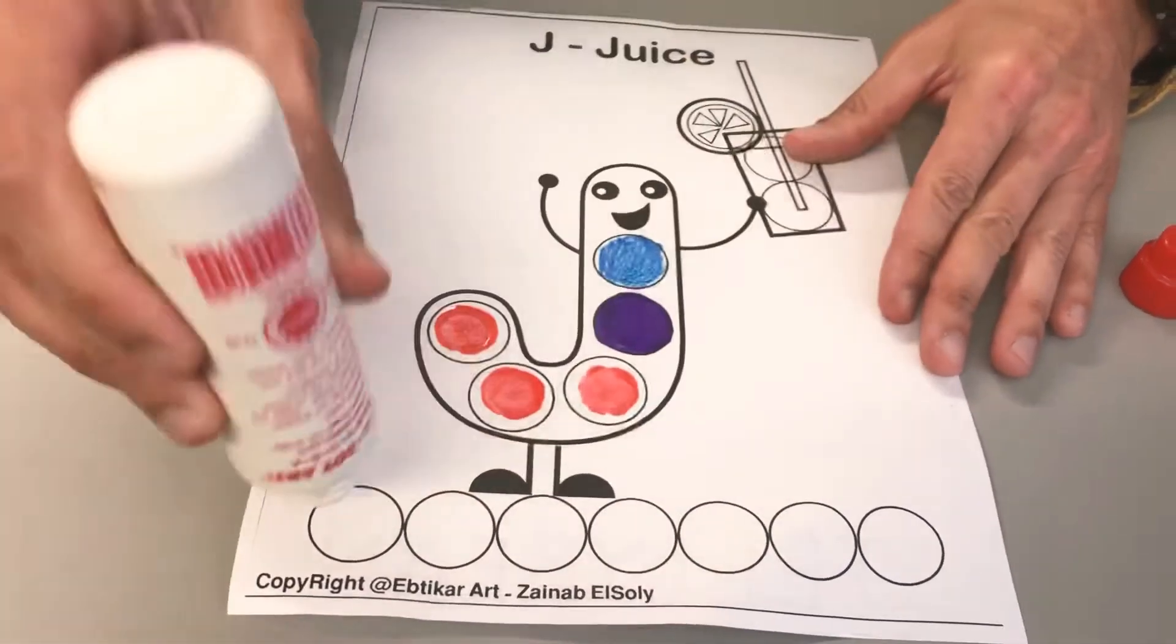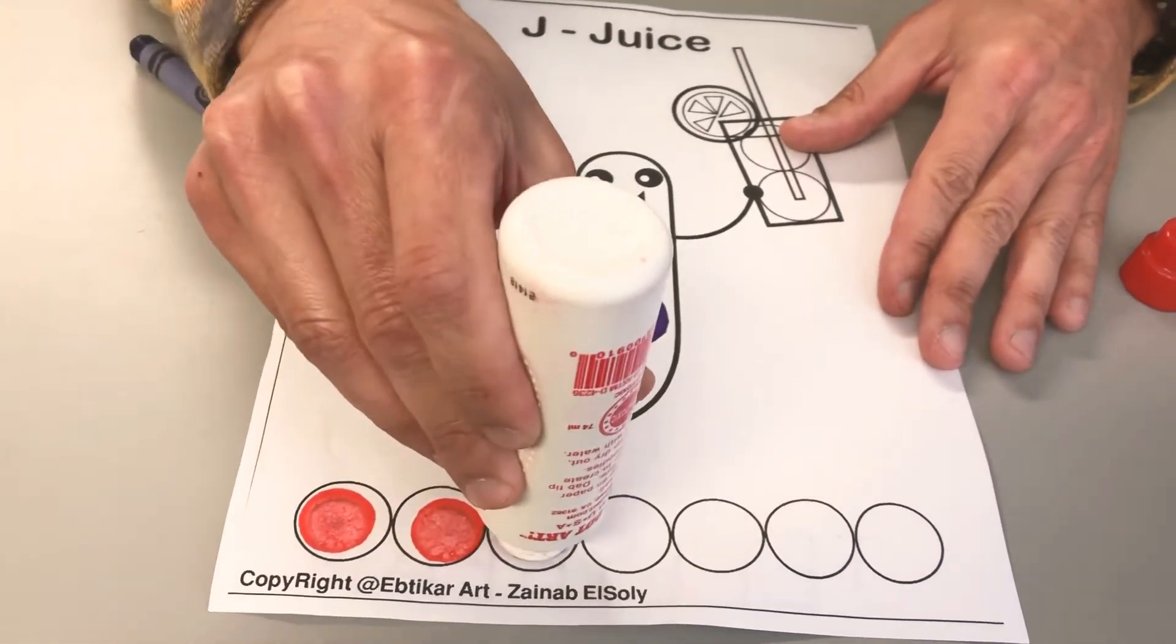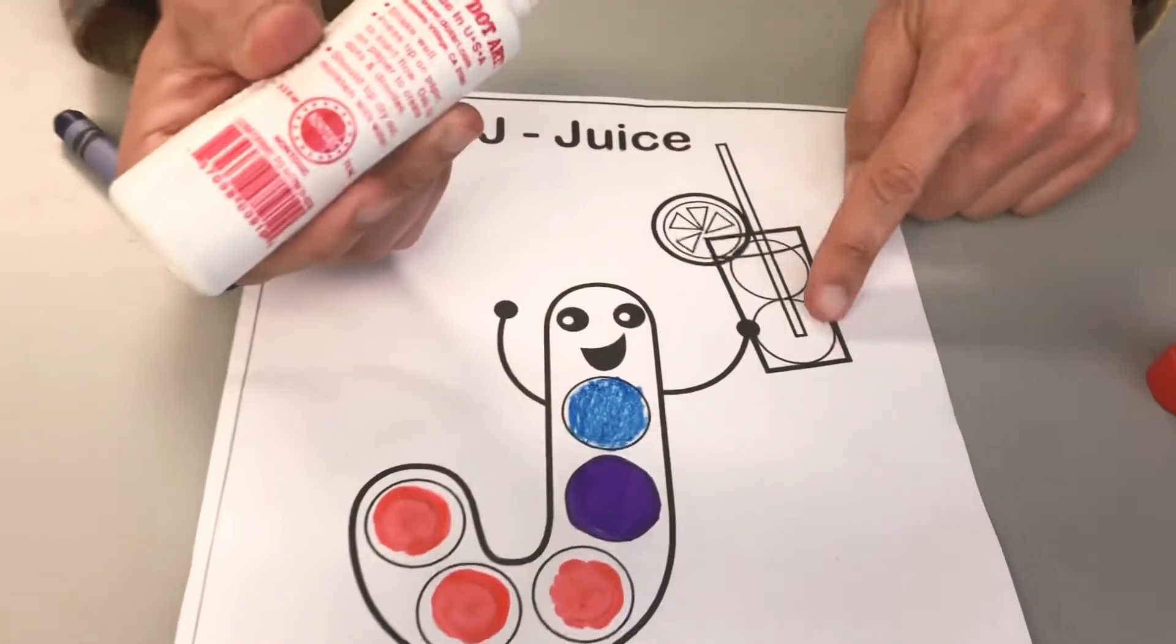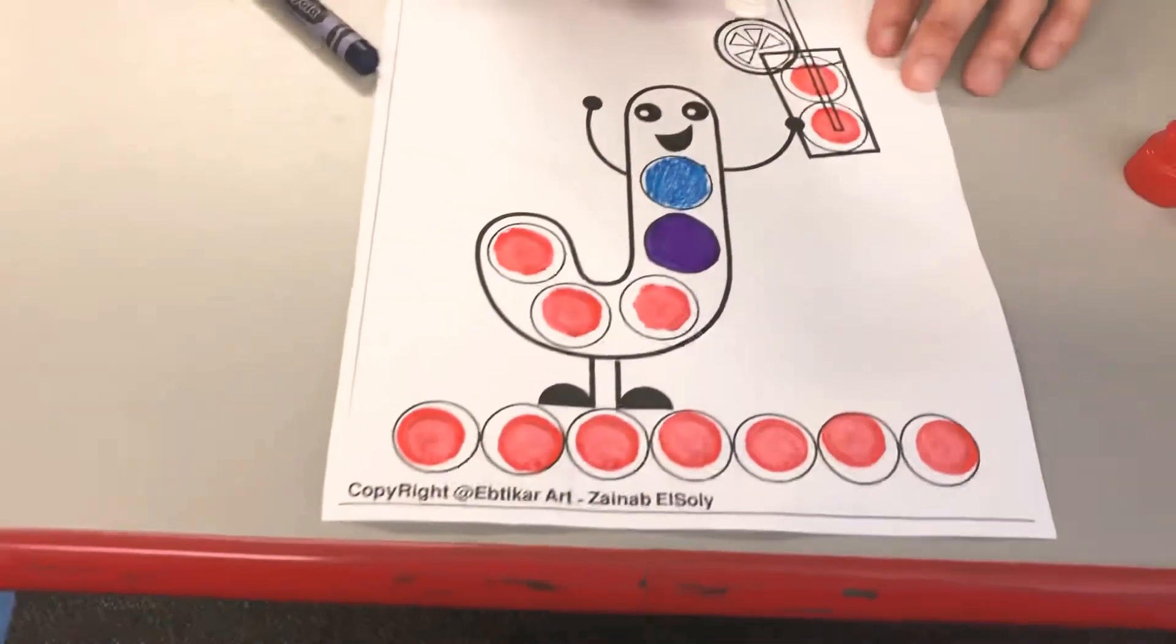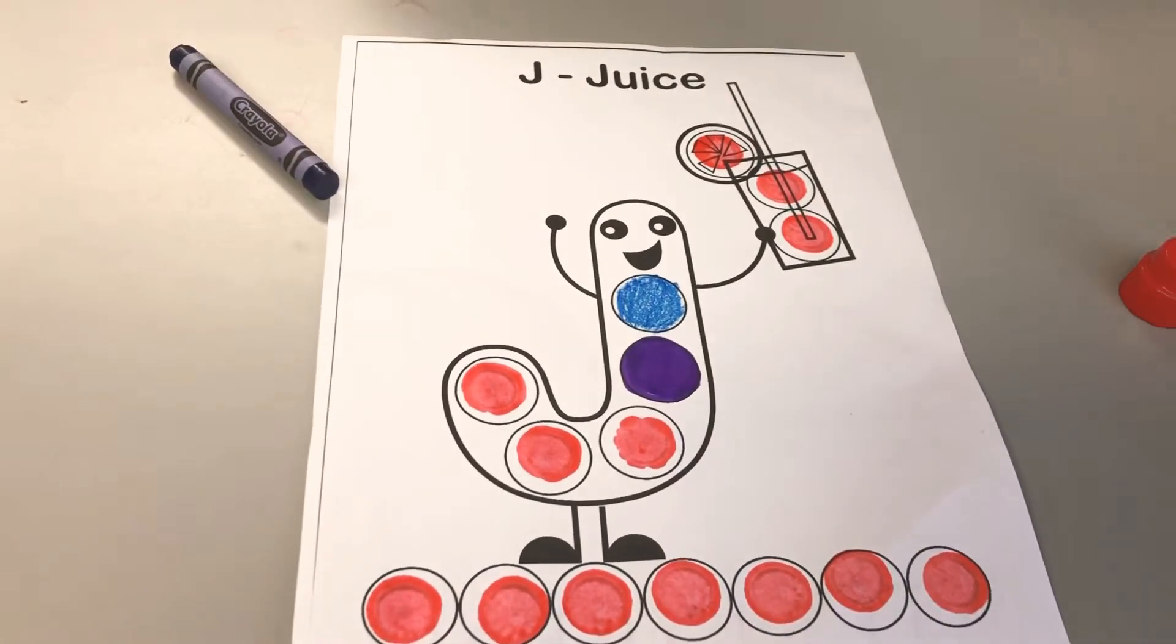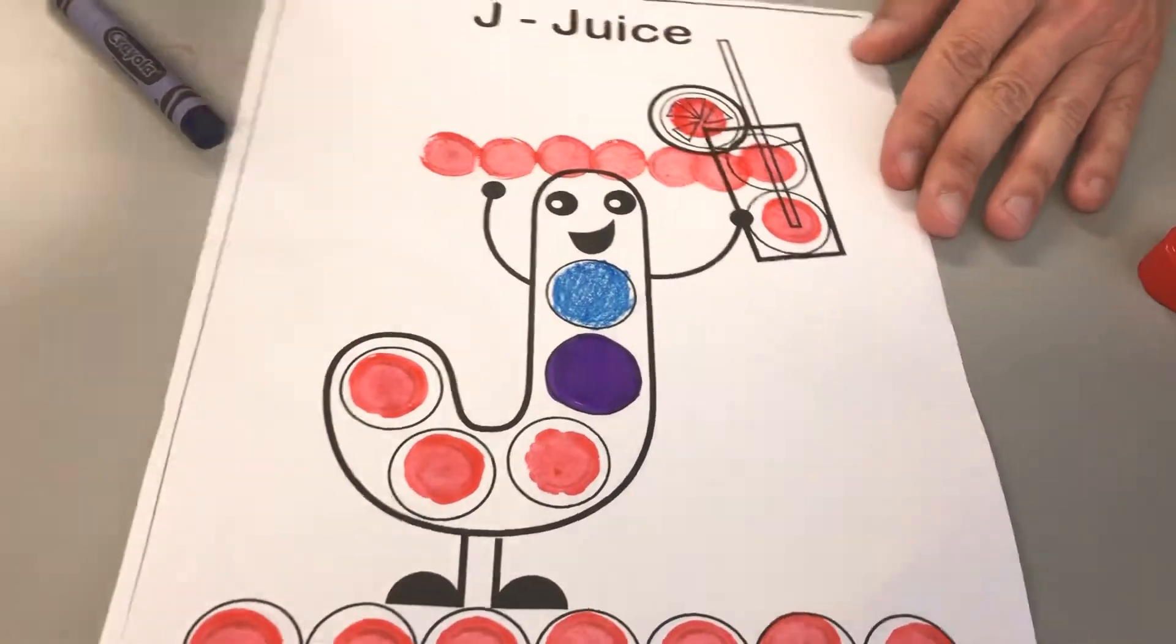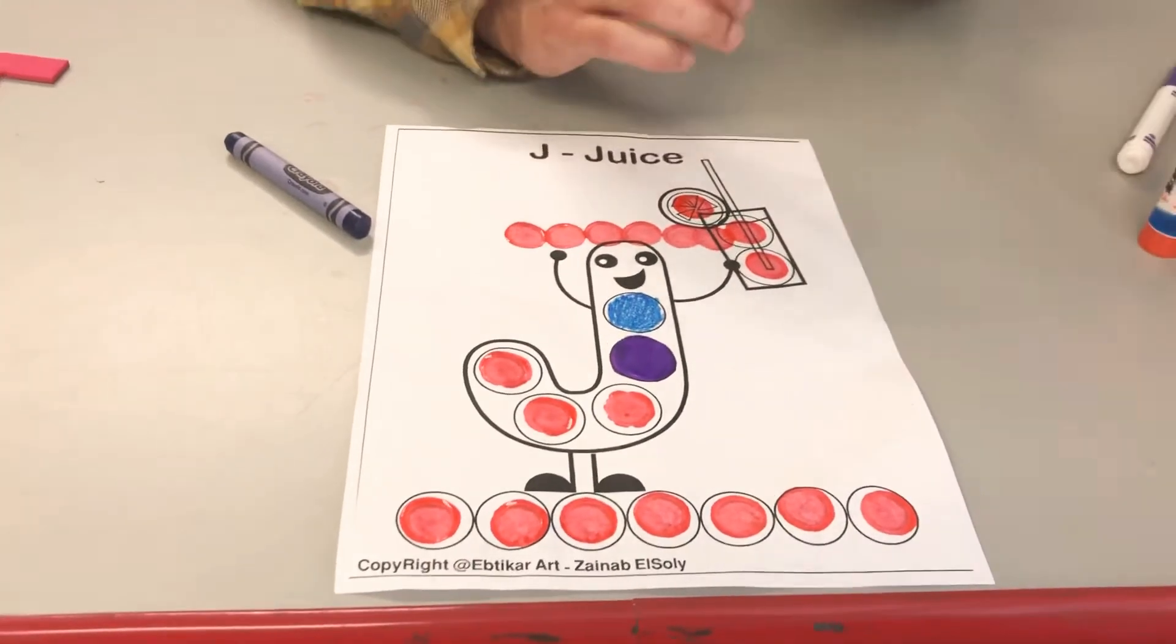And then there's some dots at the bottom, so I'm going to start with the left and go across. And then there's also a couple in the juice. I'll go ahead and dot that orange slice or maybe it's a lemon. And then because there is a top portion of the J, I might just do some dots right here too. Boom. So when you're all done with that, make sure to take a picture to show us.